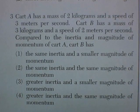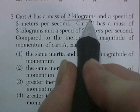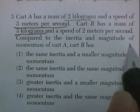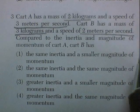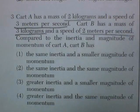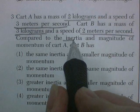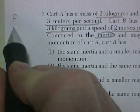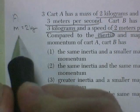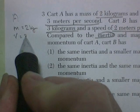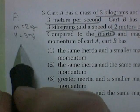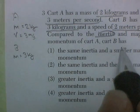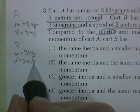Question 3. Cart A has a mass of 2 kilograms and a speed of 3 meters per second. Cart B has a mass of 3 kilograms and a speed of 2 meters per second. Compared to the inertia and magnitude of momentum, another two-part question. So let's answer the inertia question first. I'm going to draw a little picture here to help me sort them out. Cart A has a mass of 2 kilograms and a speed, velocity I'm calling it, of 3 meters per second. Cart B has a mass of 3 kilograms and a speed of 2 meters per second.